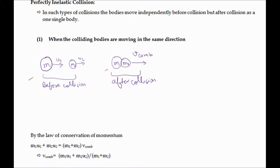To calculate v_com and the kinetic energy after the collision, we apply the law of conservation of momentum. In a collision, the external force acts for a very short duration and is very small compared to the internal force, so we consider only internal forces and apply conservation of momentum.